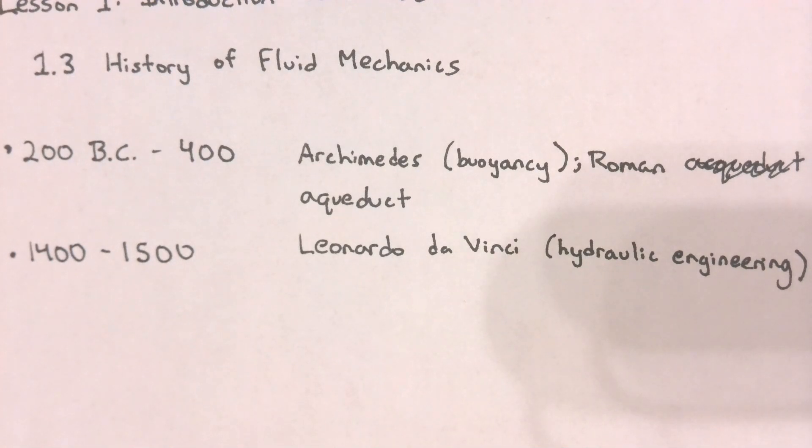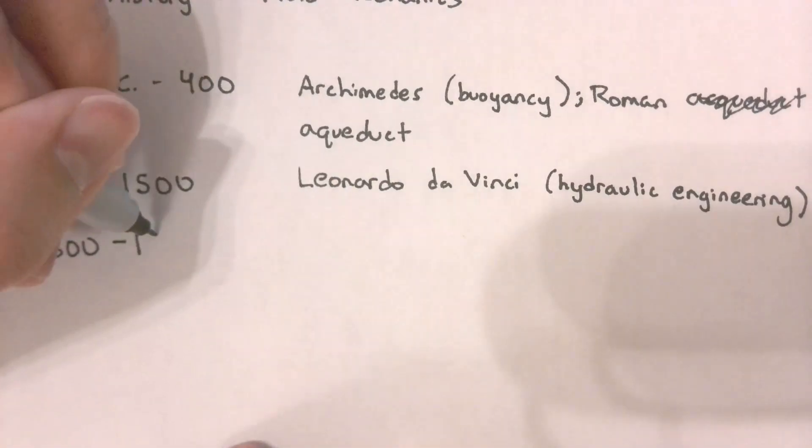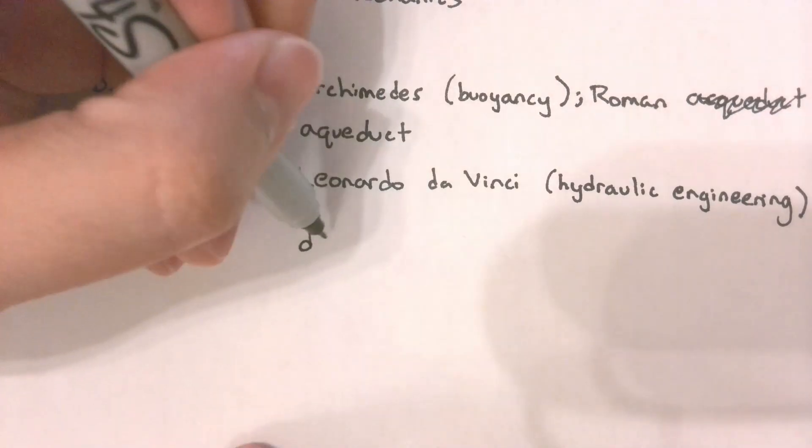Through Leonardo da Vinci, the field of hydraulic engineering was established. Many engineers used his work and tried to build on it to improve drainage, irrigation, and navigation.